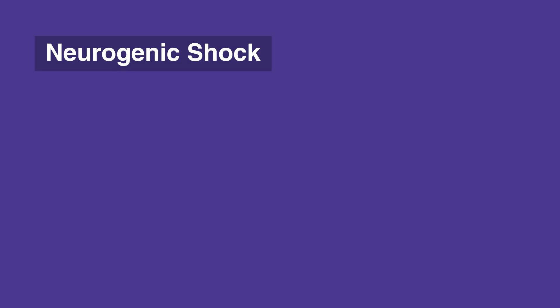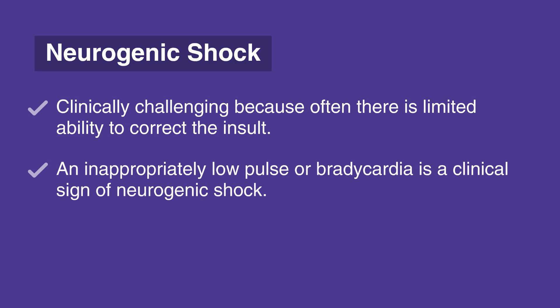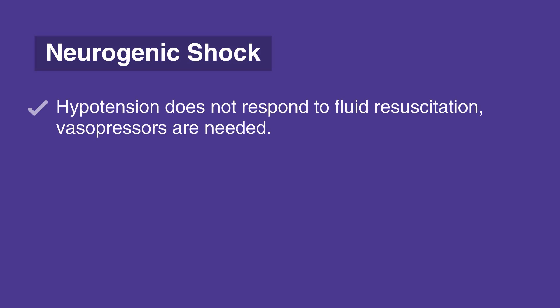Neurogenic shock is clinically challenging because often there is limited ability to correct the insult. Injury to the autonomic pathways in the spinal cord results in decreased systemic vascular resistance and hypotension. An inappropriately low pulse, or bradycardia, is a clinical sign of neurogenic shock. Therefore, treatment is focused on fluids first — administer a 20 milliliters per kilogram bolus over 5 to 10 minutes, then reassess the individual for a response. If hypotension does not respond to fluid resuscitation, vasopressors are needed.